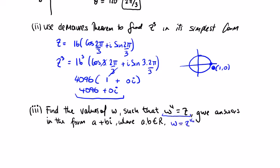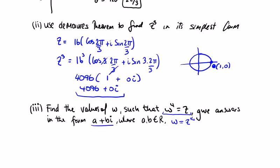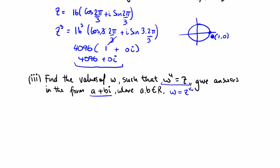We're asked to give our answer in the form a plus bi, so we write down z again. We want z to the power of a quarter. We have z is equal to 16 by the cos of 2 pi over 3 plus i sine 2 pi over 3.